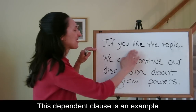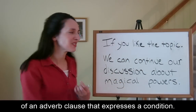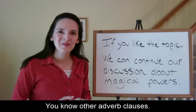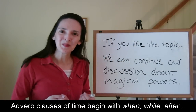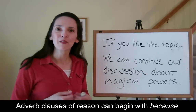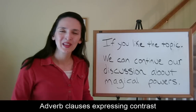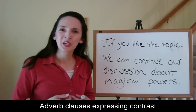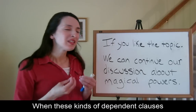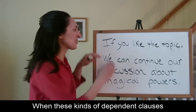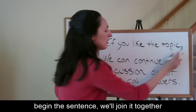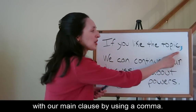This dependent clause is an example of an adverb clause that expresses a condition. You know other adverb clauses: adverb clauses of time begin with "when," "while," or "after"; adverb clauses of reason can begin with "because"; adverb clauses expressing contrast start with words like "although." So when these kinds of dependent clauses begin the sentence, we'll join it together with our main clause by using a comma.